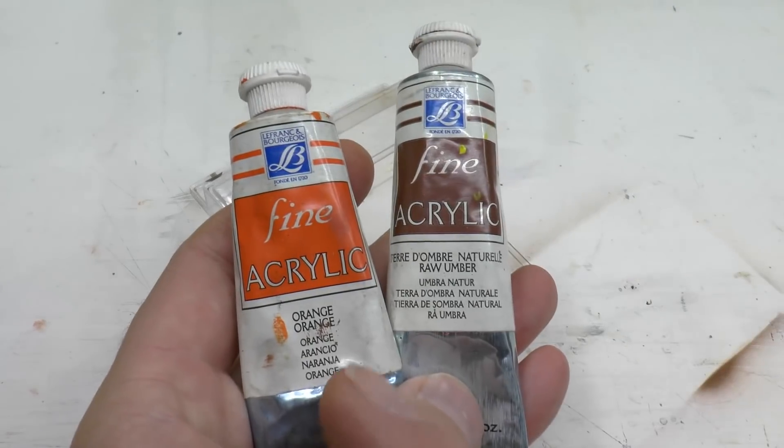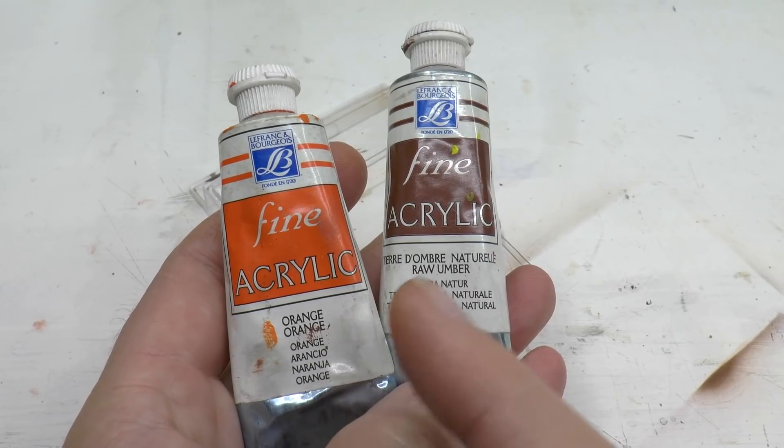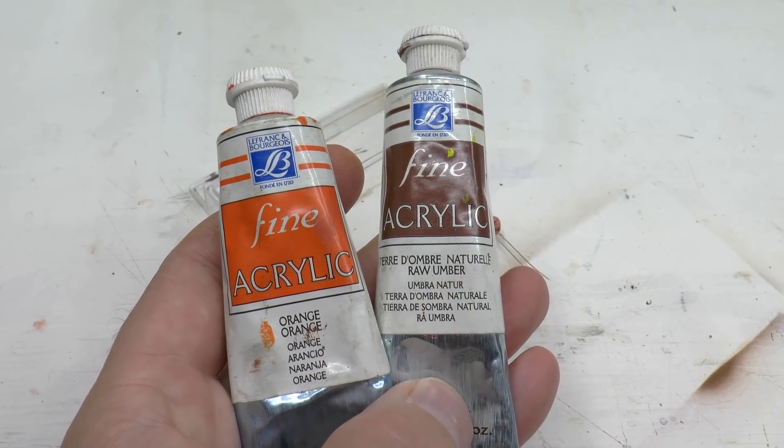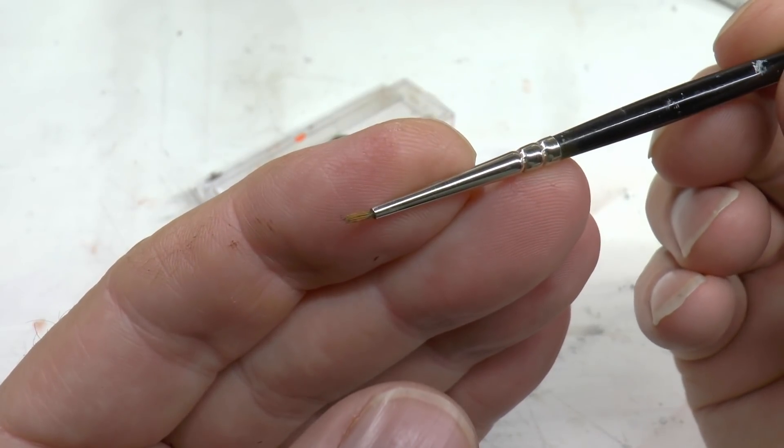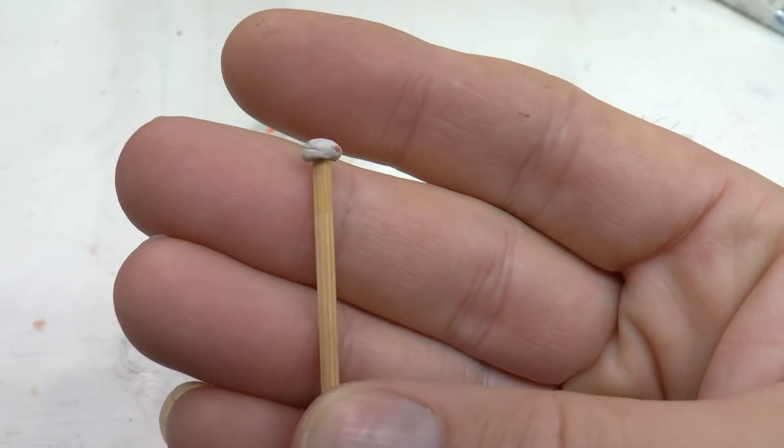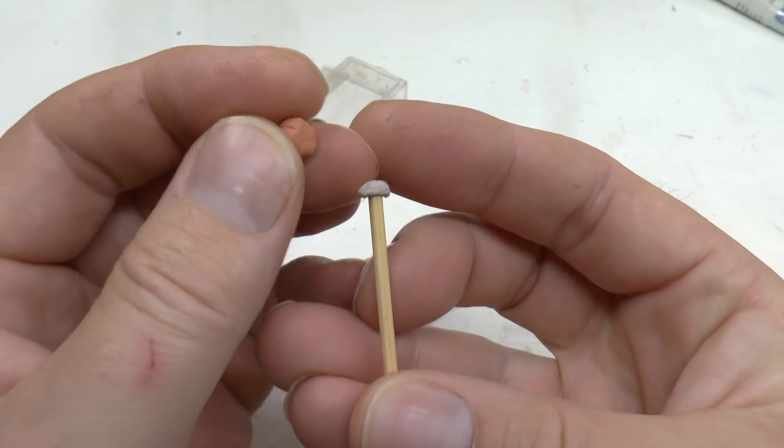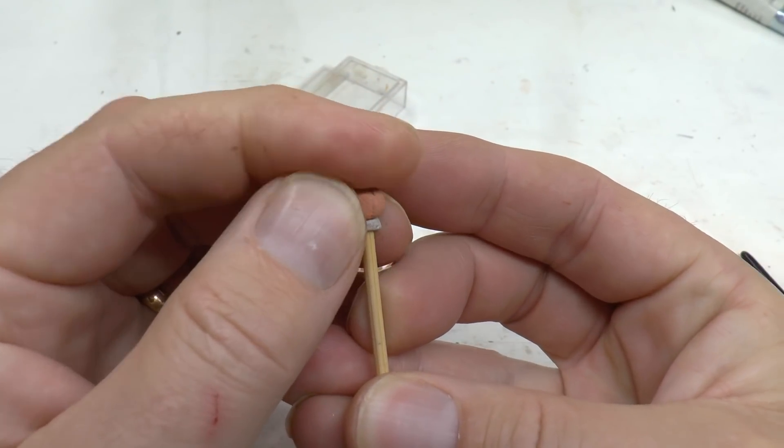Let the pumpkins dry overnight and then it's time for painting. I use acrylic paint, orange and raw amber.